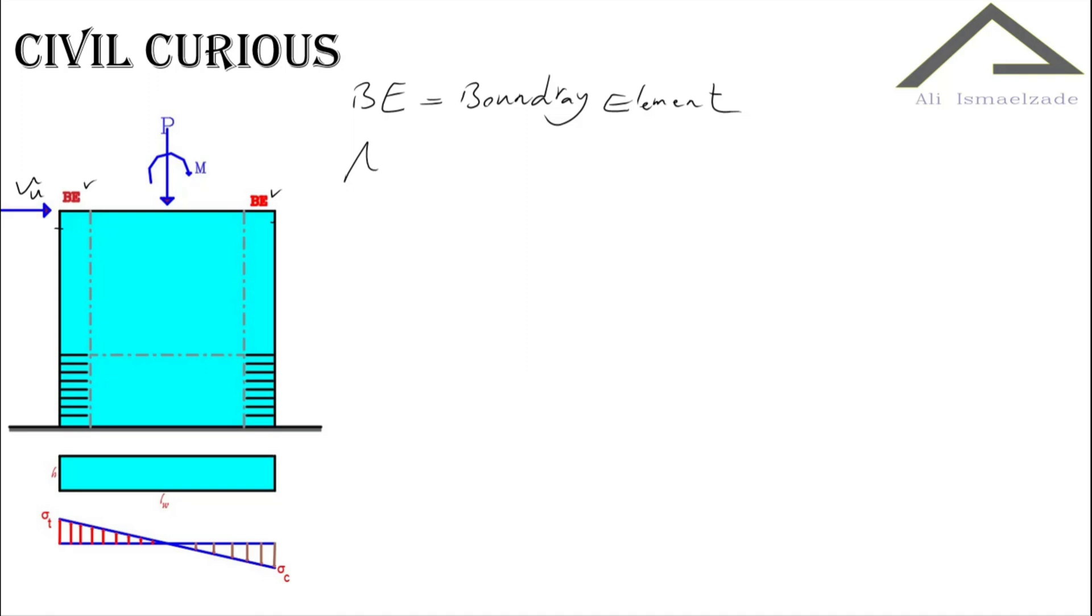The gross section of our wall, AG, is equal to H times LW. LW this is H and this is LW. And I can write here the moment of inertia of gross section is H times LW to the power of 3 divided by 12. This is the moment of inertia of our shear wall.